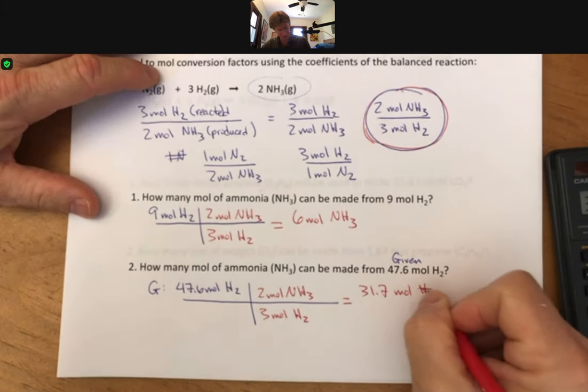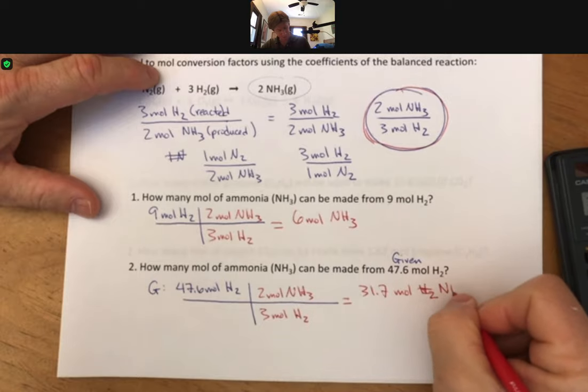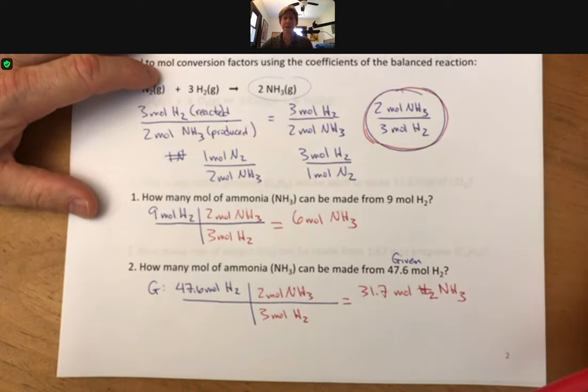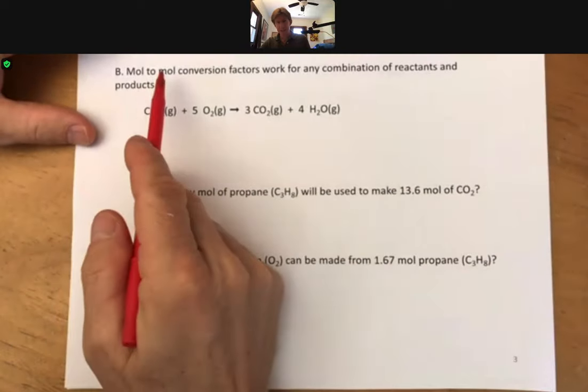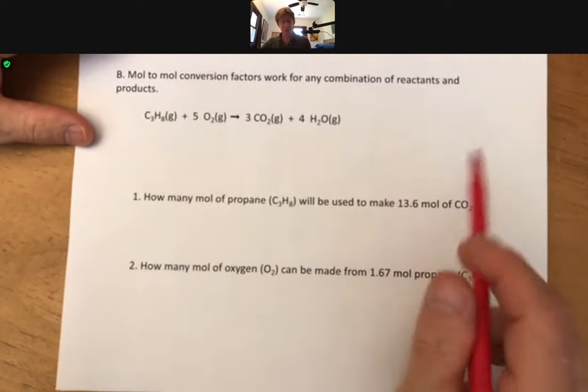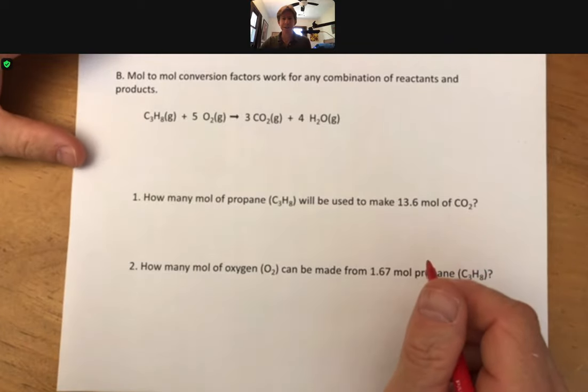31.7 moles of hydrogen. Oh, moles of, sorry, moles of ammonia. Like so. Now, as I mentioned,